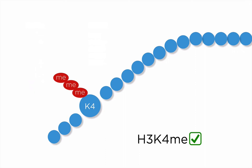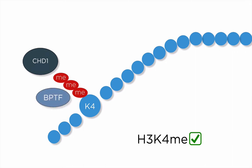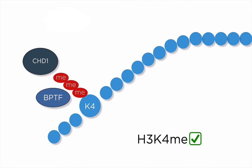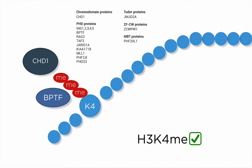H3K4 trimethylation, for example, can recruit the chromodomain protein CHD1 as well as the PHD protein BPTF. Both proteins are able to open up chromatin and allow activation of transcription. They are also preventing binding of repressive complexes such as NuRD. This stabilizes transcriptional activity. The list of H3K4 methylation binding proteins is steadily growing and the complex mechanisms of their interactions are yet to be determined.